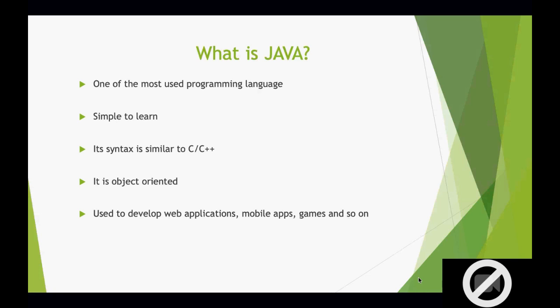Java is one of the most popular and most used programming languages and it has been like that for so many years. It is simple to learn, and when compared to C# or C, the syntax are basically the same and the code is maintainable.